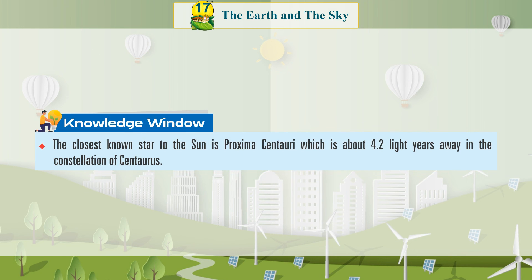Knowledge Window: The closest known star to the sun is Proxima Centauri, which is about 4.2 light years away in the constellation of Centaurus.